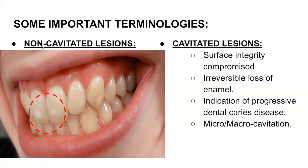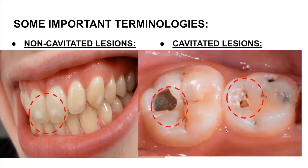What about cavitated lesions? The surface integrity is compromised. There's irreversible loss of enamel and indication of progressive dental caries disease, which means the caries is active and going ahead. There could be a micro or macro cavitation — this is a macro cavitation where the enamel is completely lost and the dentin is being exposed, which is a cavitated lesion.